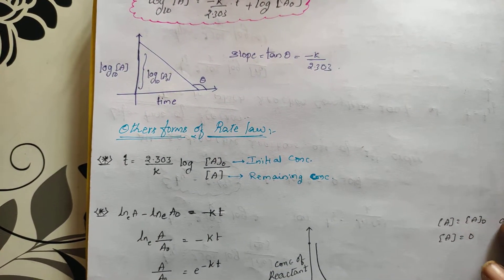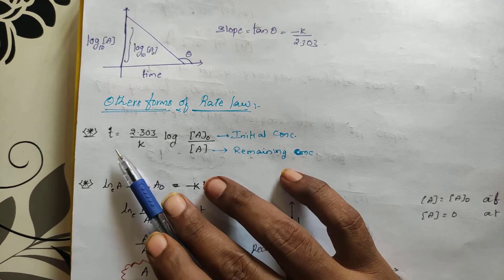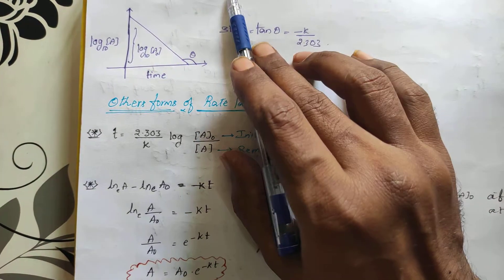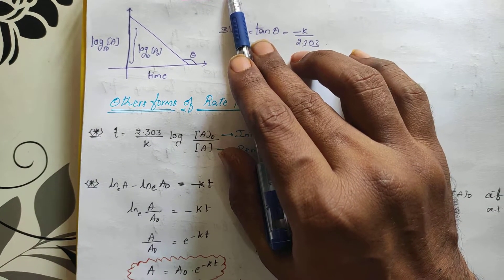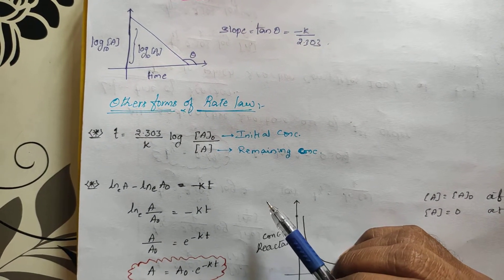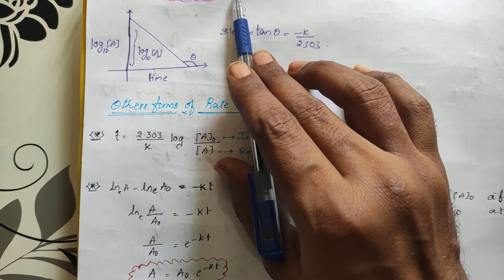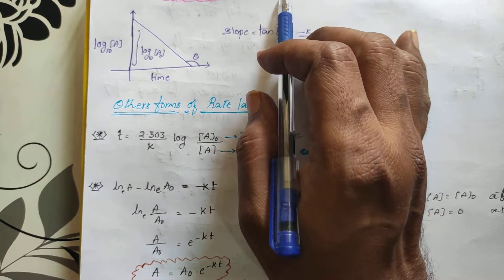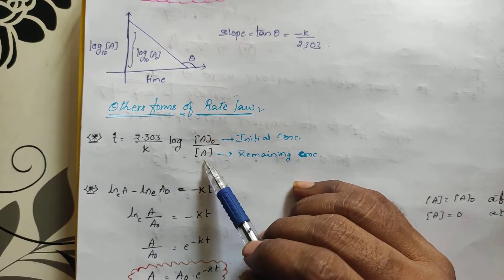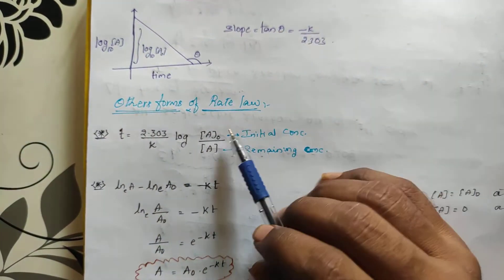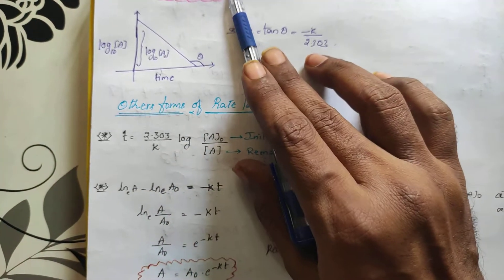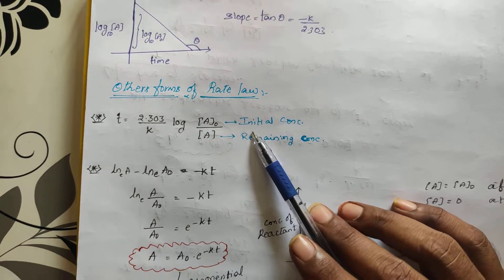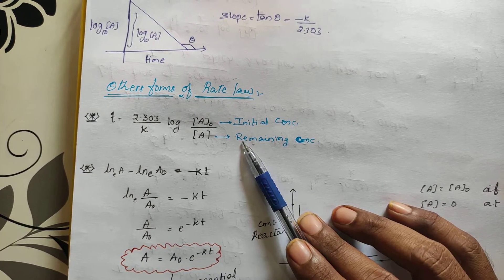We can write all first order equations as: K = (2.303/t) · log(initial concentration / final concentration). If you rearrange for t, you will be getting: t = (2.303/K) · log(initial concentration of reactants / final concentration of reactants).